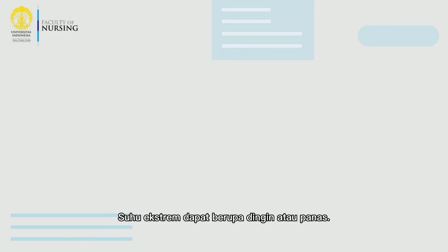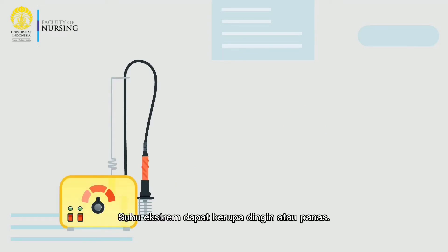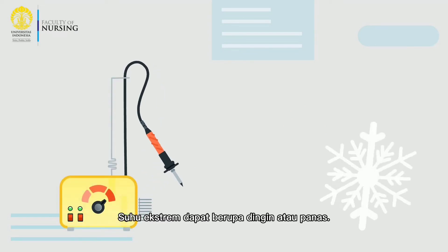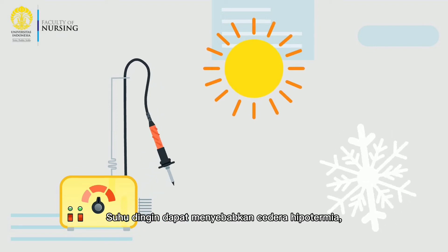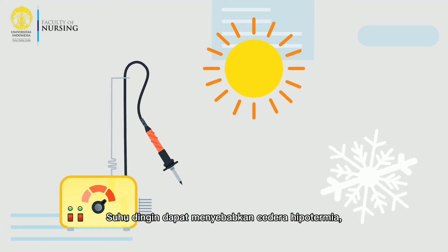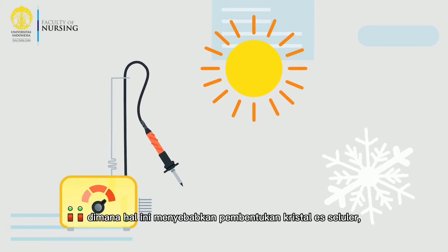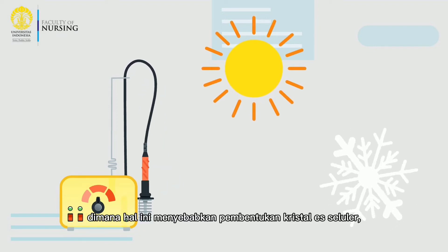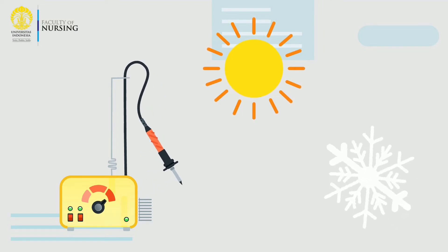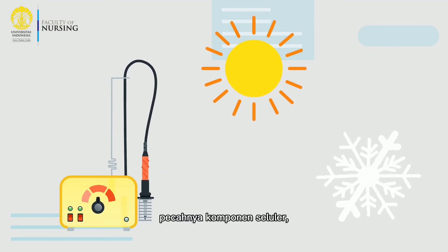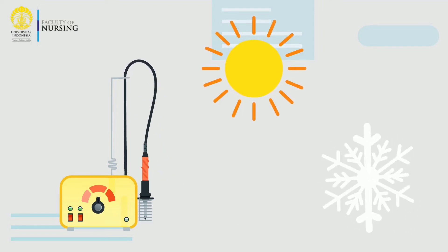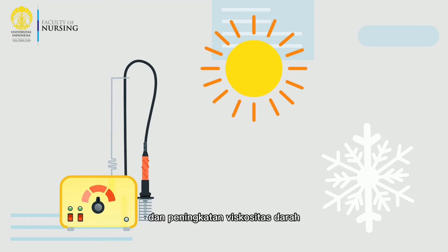Extreme temperature can be either cold or hot. Cold temperature can cause hypothermic injury, where this leads to cellular ice crystal formation, rupture of cellular components, and severe vasoconstriction, and increased blood viscosity which can lead to ischemic injury.